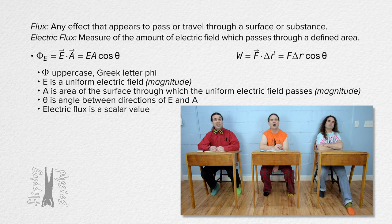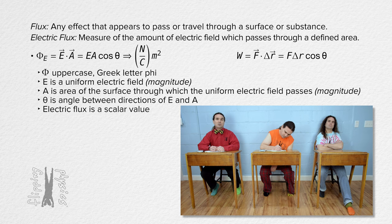Electric flux is a scalar. The units for electric flux are — well, electric field is in newtons per coulomb and area is in square meters — so the units for electric flux are newtons times square meters divided by coulombs.